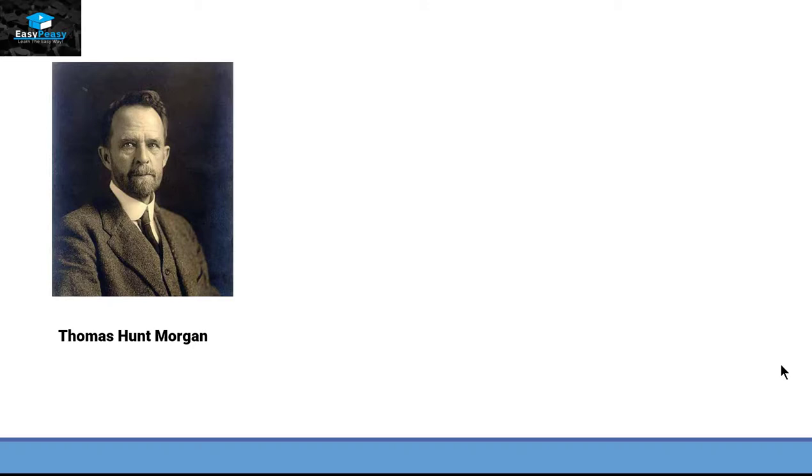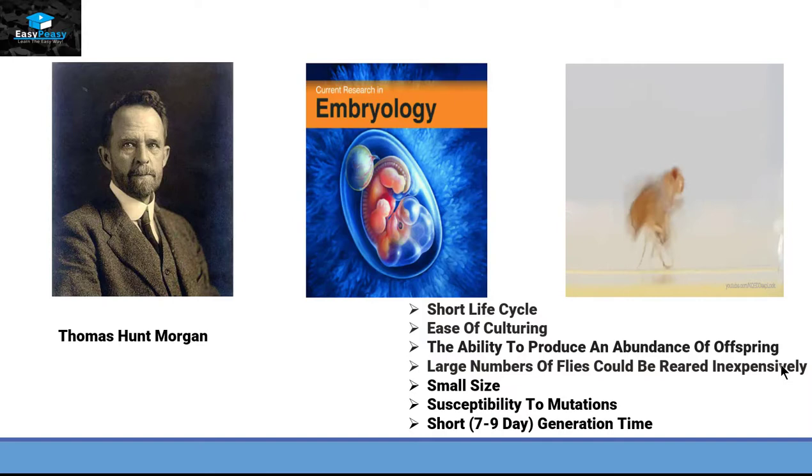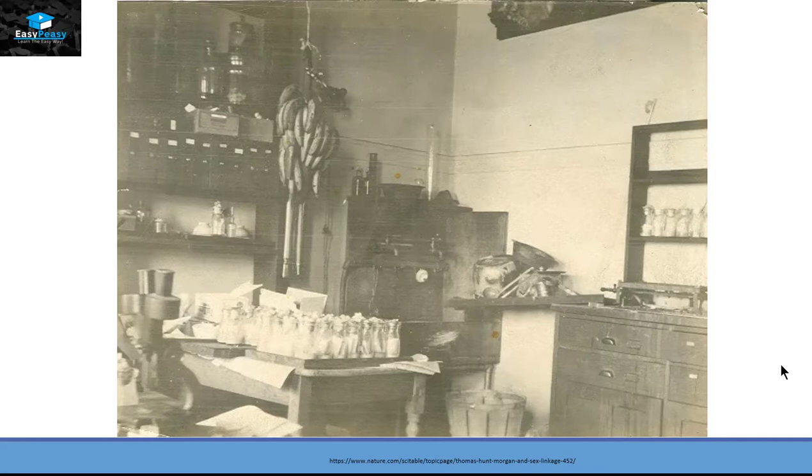Thomas Hunt Morgan was a PhD professor interested in embryology. So he was experimenting on common fruit fly called Drosophila melanogaster. There were a lot of reasons why he chose fruit flies: they have short life cycles, they can be cultured easily on banana or agar, they have the ability to produce a lot of offspring, they can be cultured inexpensively, they are small in size and can be kept in a laboratory, they have susceptibility to mutations, and they have short generation time, almost seven to nine days.